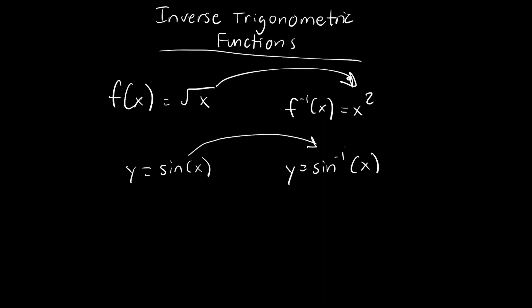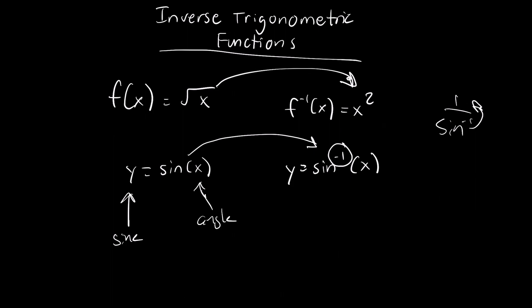Just to make sure: this is not an exponential negative one where you'd be writing a fraction and moving it to the top — it is an inverse notation, so it does have a difference. Normally, a regular sine function has the y as a sine value and the angle on the x side. But for inverse functions, it's the opposite: the sine value is on the input side, and the corresponding angle is the output y value.